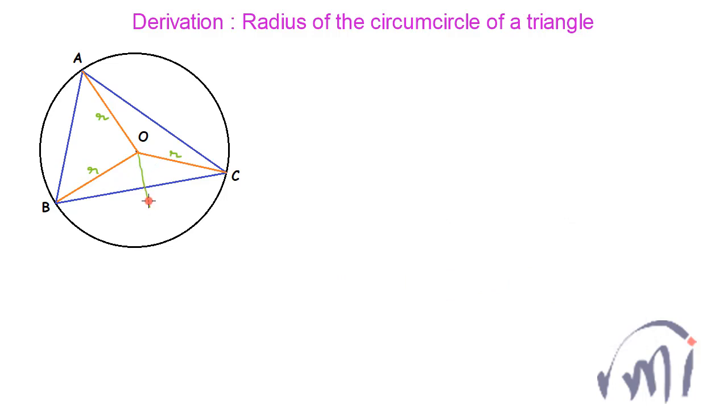So suppose this was the perpendicular bisector. That means this is right angle 90 degrees, and if I assume the angle subtended by arc BC at the circle is equal to theta, then the angle subtended by the same arc at the center of the circle will be equal to 2 theta.